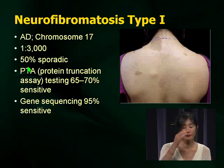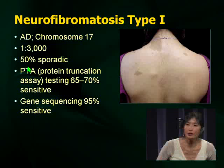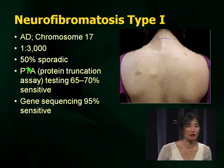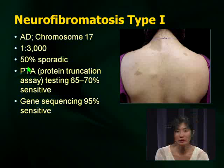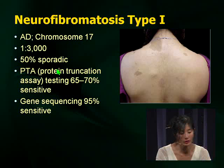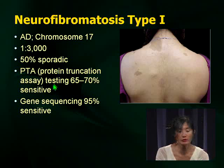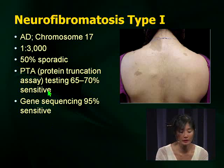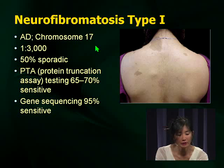NF1 — we see this much more commonly. Examiners love to ask questions about it. Mode of inheritance is autosomal dominant, chromosome 17. 50% are sporadic, just like in tuberous sclerosis. You will not get questions on what the most important way of finding the chromosomal abnormality is — just keep in mind the defect is in chromosome 17.